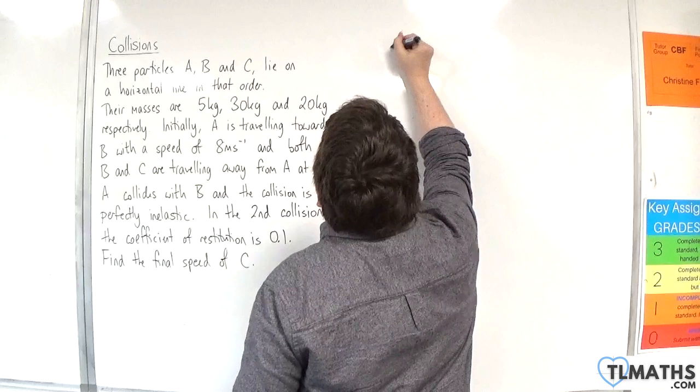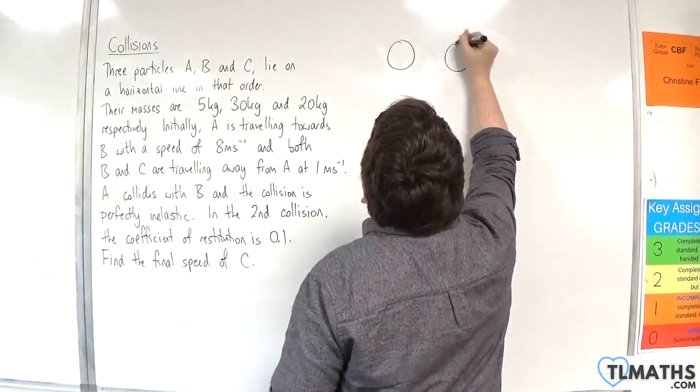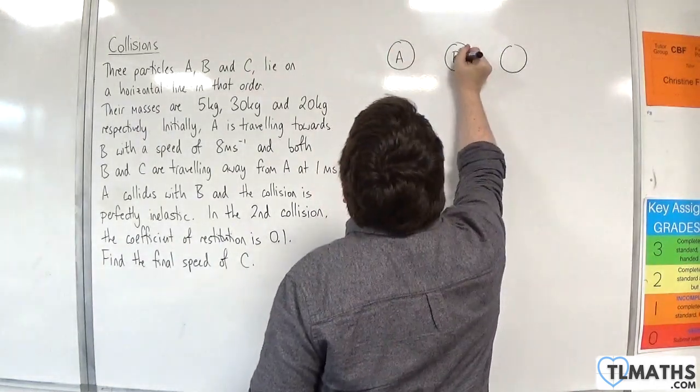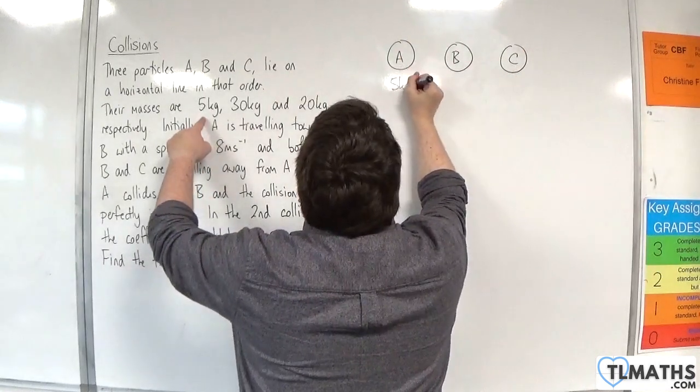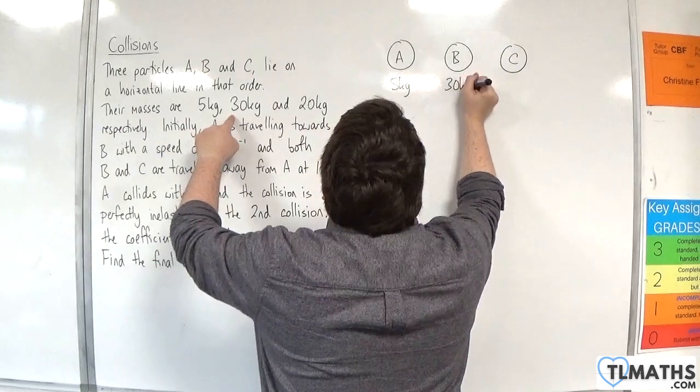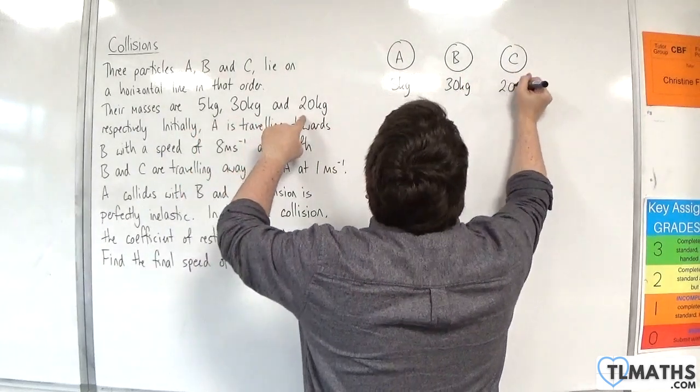Let's draw a diagram so we can visualize what's going on. Here are our three particles A, B, and C. They have masses of 5 kilos, 30 kilos, and 20 kilos, respectively.